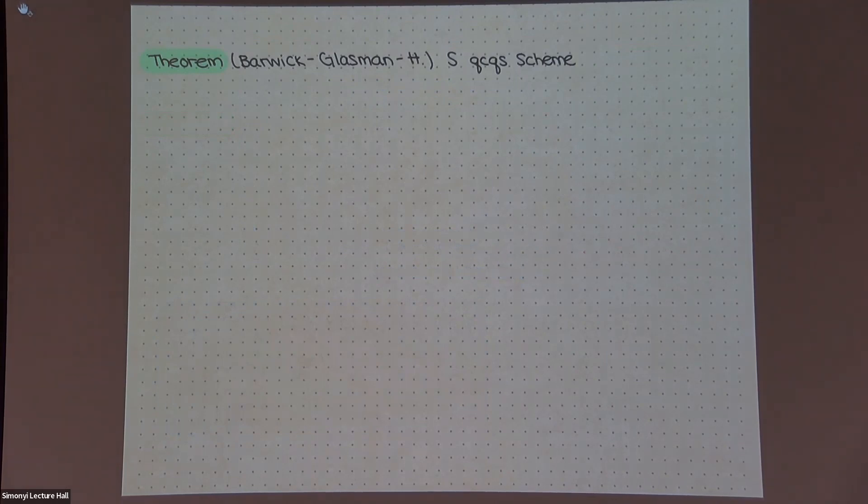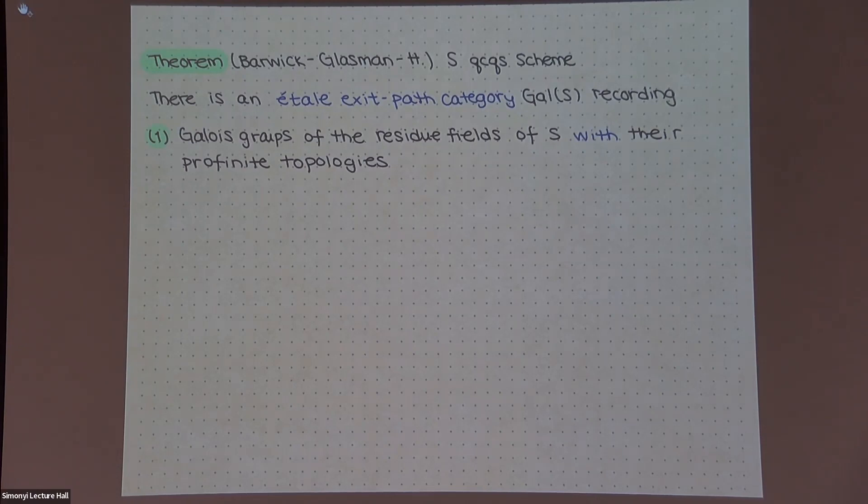So, but it works in just complete generality. So you have some nice scheme. And there's what you might call an étale exit path category because it's an étale version of the exit path category. And we call Gal(S) because it generalizes Galois groups. And the sort of thing it records is Galois groups of all the residue fields, along with their profinite topologies and the ramification data related. Now, for the experts in the room, what this is, is it's the category of points of the étale topos, with some extra structure. If you don't know what that means, don't worry. But it's something that the Grothendieck school computed completely a long time ago, and then you can endow it with some extra structure.